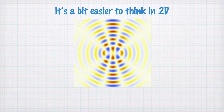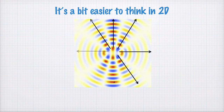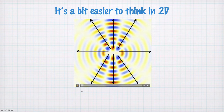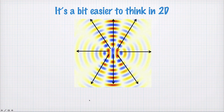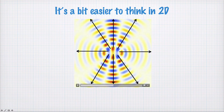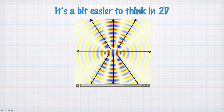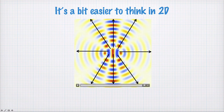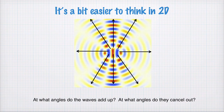Here it is in two dimensions. We see these lines of constructive interference, and we can ask the question: at what angle do we get constructive interference? What's the condition we require to get constructive interference? What angles do the waves add up? And we can also ask what angles do the waves cancel out — what angle do we get destructive interference?